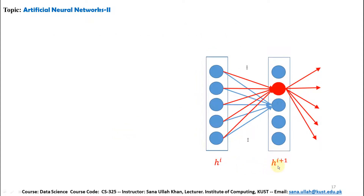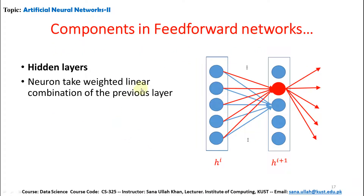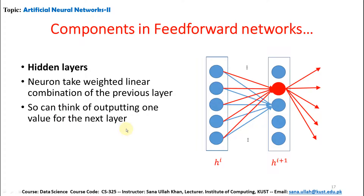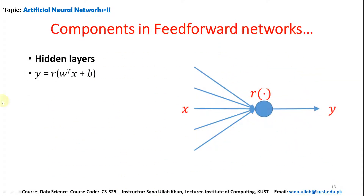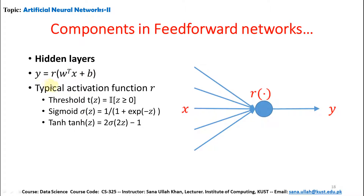For the hidden layer, neurons take weights as a linear combination of the previous layer. Each hidden layer takes inputs from the previous layer as a forward pass. The hidden layer formula is: H = R(W^T * X + B), where R is the activation function. Some typical activation functions include: threshold (where Z >= 0), sigmoid (1 / (1 + e^(-Z))), tanh (2*sigma(2Z) - 1). Each hidden layer node contains its own activation function.